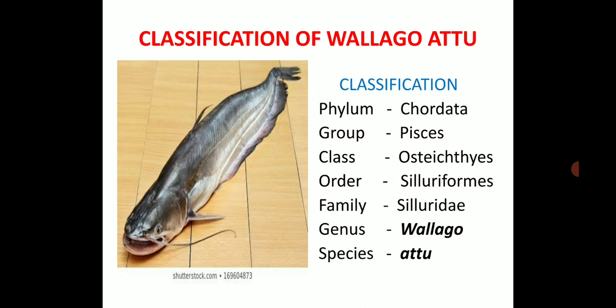The classification is as follows: Phylum Chordata — this group includes all vertebrate animals. Next is the group Pisces — all fishes belong to this group. Class Osteichthyes — fish in this class have a bony skeleton. Order Siluriformes. Family Siluridae. Then genus Wallago and species Attu.